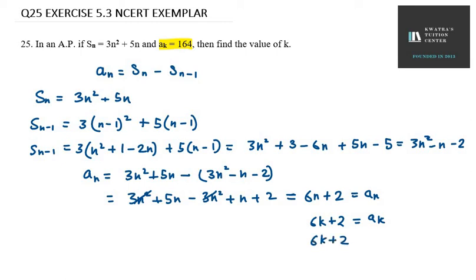6k plus 2 equals 164. Taking 2 to the right side, 6k equals 164 minus 2, it will be 162.